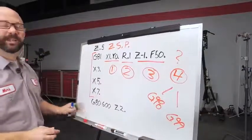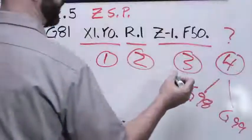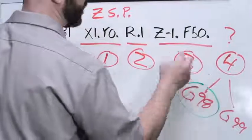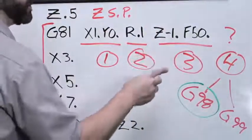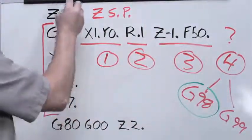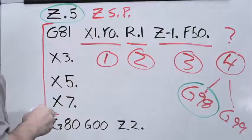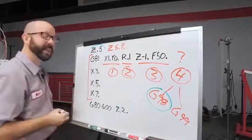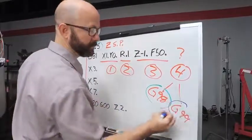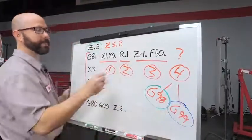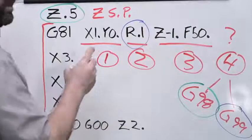Now, if we use a G98, the tool, after it's done drilling the hole, is going to rapid back up to that Z starting position that we talked about earlier. If we use a G99, that tool is going to rapid back to our R plane.